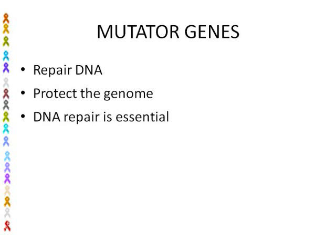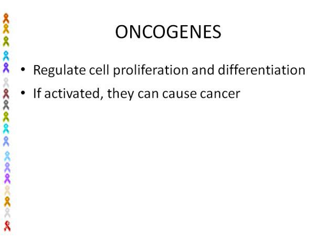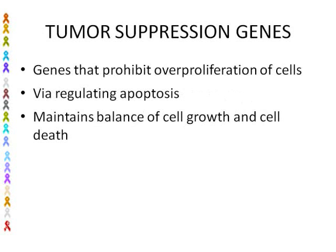Mutator genes actually repair DNA — they protect the genome, meaning they protect the genetic code of the individual. DNA repair is essential because of the constant damage that occurs from internal and external environments. Oncogenes regulate cell proliferation and differentiation; if activated, they can cause cancer. Tumor suppressor genes prohibit over-proliferation of cells by regulating apoptosis, and they maintain the balance of cell growth and cell death.